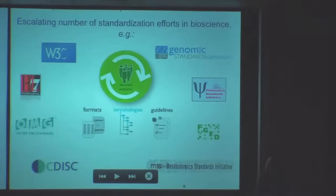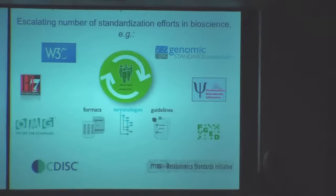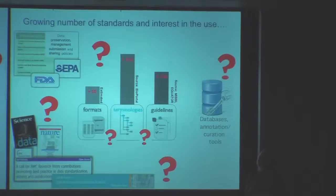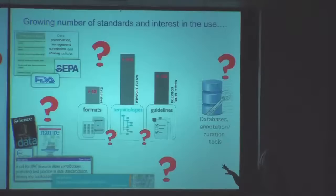This is information that needs to be represented, described, and exchanged. It's really important to standardize information so that it can eventually be transformed into RDF. But the problem is that the number of standards is really growing. There are approximately 50 formats, over 250 ontologies in BioPortal, and over 150 checklists.